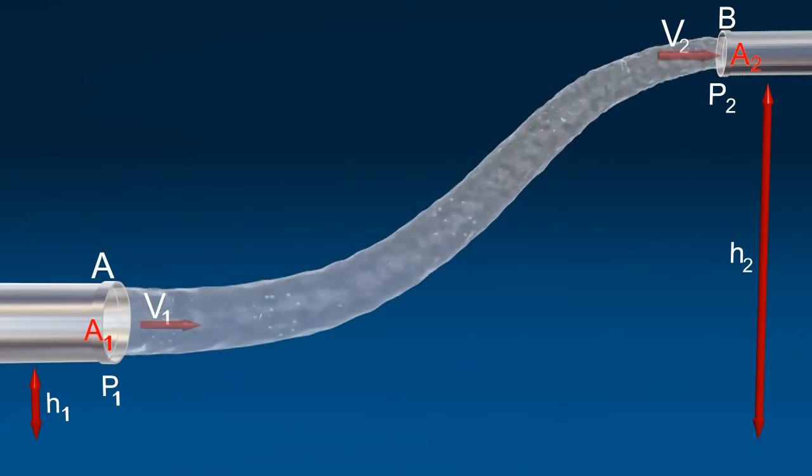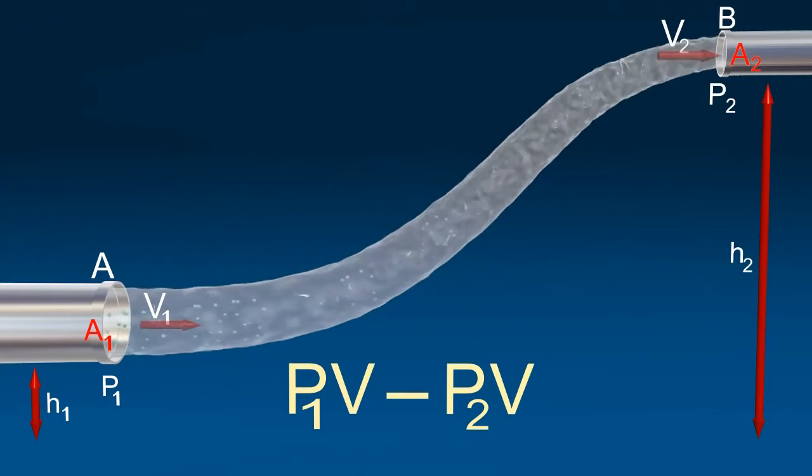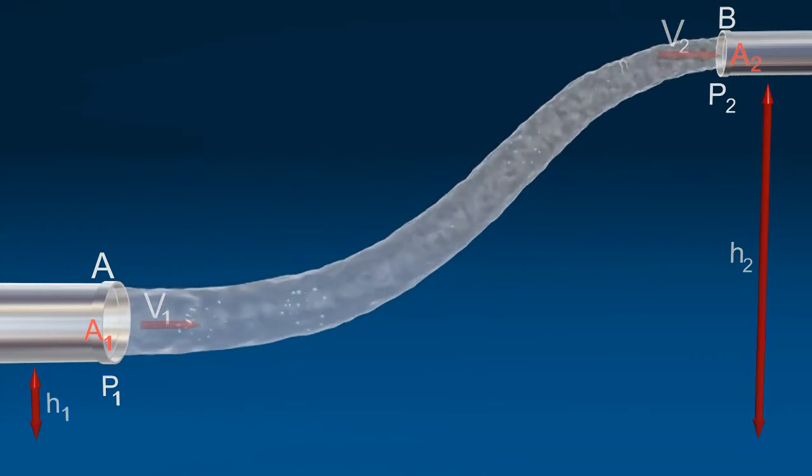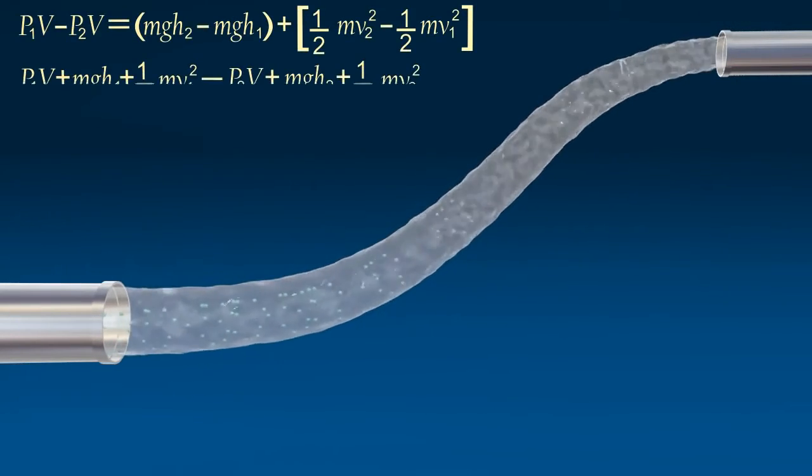Network done equals P1V minus P2V. The network done per second increases the potential energy and kinetic energy per second from A to B. According to Law of Conservation of Energy.